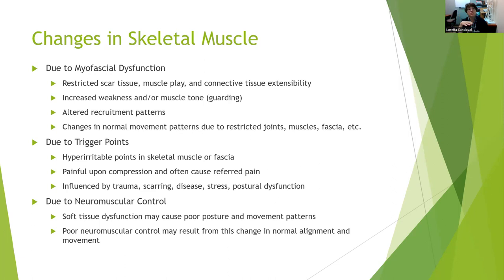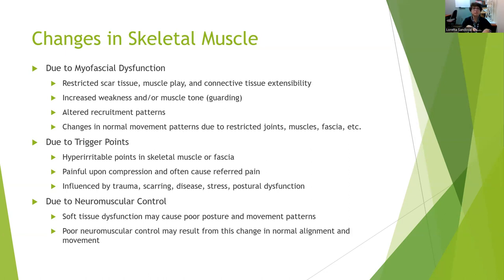There are going to be a lot of changes in skeletal muscle for various reasons. One reason is myofascial dysfunction — restricted scar tissue, restricted muscle play, restricted connective tissue extensibility. You can have weakness in skeletal muscle or muscle tone from guarding: if you're in pain, that can stimulate your muscles to contract to guard the area. You can also have altered muscle recruitment patterns due to restricted joints, muscles, and fascia — compensatory movements. Trigger points are hyper irritable points in the skeletal muscle or fascia, usually painful upon compression and often causing referred pain to a specific pattern. Trigger points can be influenced by trauma, scarring, disease, stress, or postural dysfunction. We can use soft tissue mobilization to change myofascial dysfunction and trigger points.